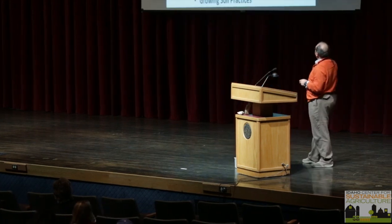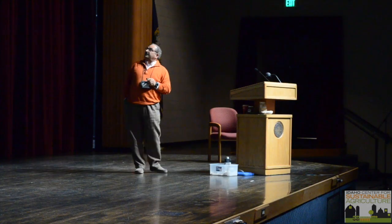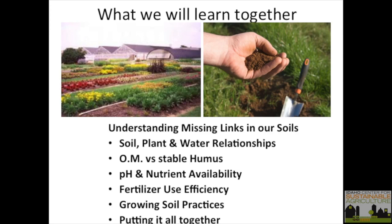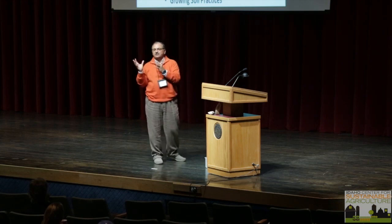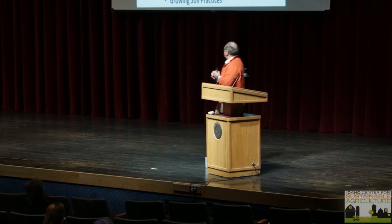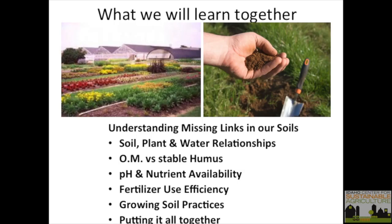Today we're going to understand the missing link in our soil-plant-water relations. I'll briefly cover organic matter versus humus — humus being the stable part of the soil that takes thousands of years to form. I'll also discuss pH and nutrient availability, fertilizer use efficiency, and what I call 'growing soil practices' — how we can make our soils much more sustainable.